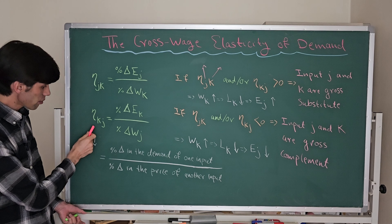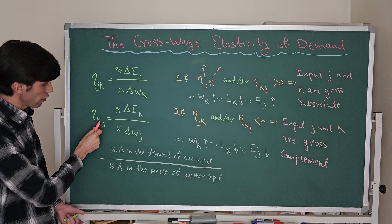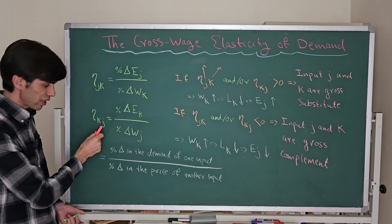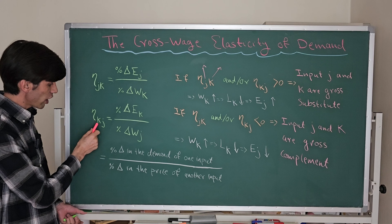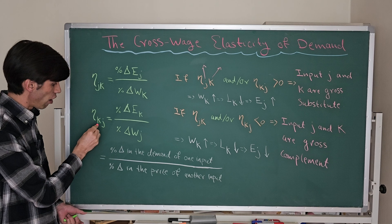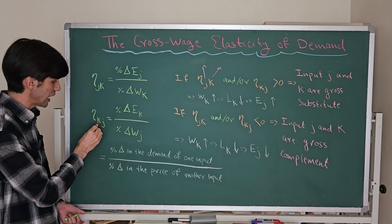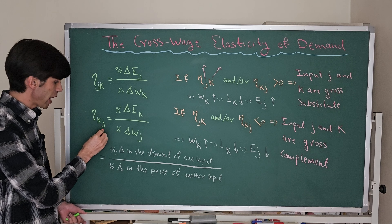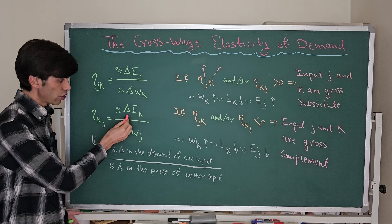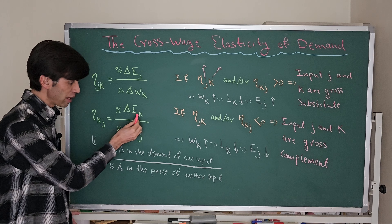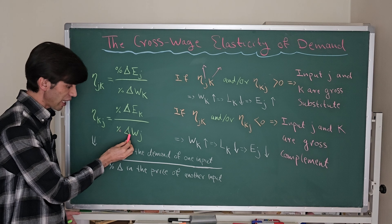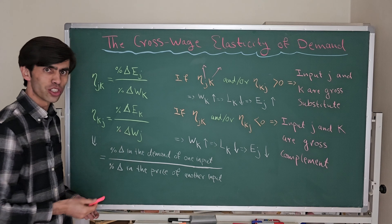In another case, if we want to know the cross-wage elasticity of input K with respect to input J, then eta-KJ — that is, the elasticity of input K with respect to the wage level of input J — equals the percentage change in the employment level of input K divided by the percentage change in the wage level of input J.